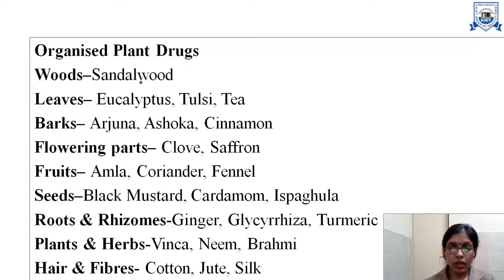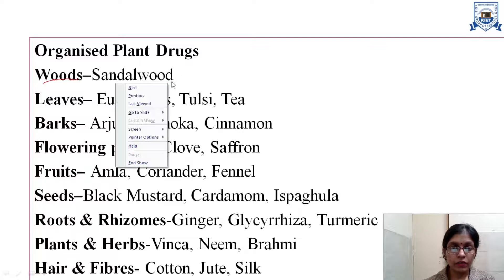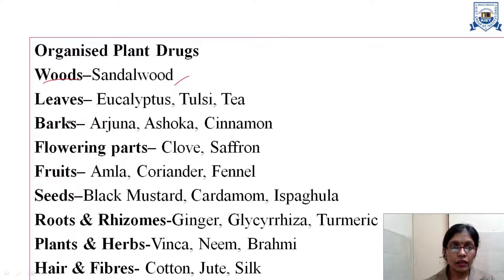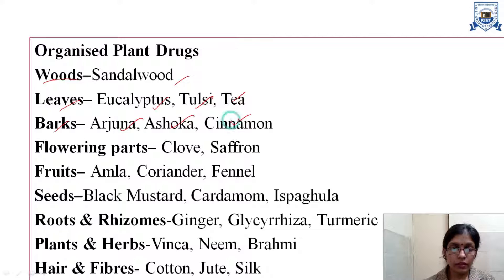Now let us have a look at individual organized plant drugs. Woods — example, sandalwood. Leaves — examples include eucalyptus, tulsi and tea. Barks — examples are arjuna, ashoka and cinnamon. Flowers — examples are clove and saffron.